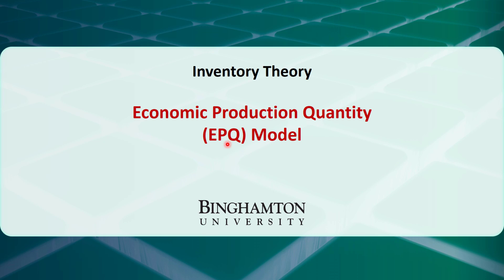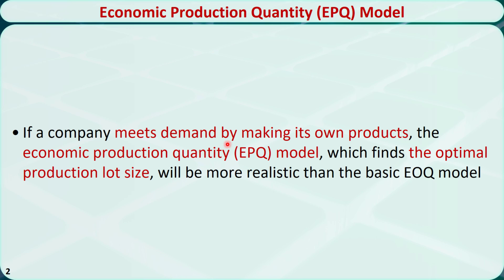We introduced the basic EOQ models in the previous videos. A company needs to place orders with outside suppliers and maintain an inventory to satisfy their own or their customers' demands. In some situations, a business may choose to produce goods internally rather than ordering from an outside supplier. If a company meets demand by making its own products, the Economic Production Quantity model will be more realistic than the basic EOQ model.